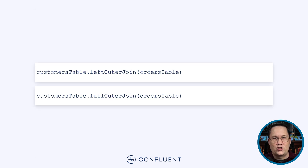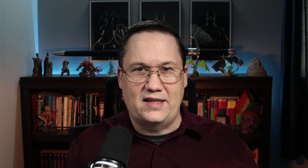In addition to inner joins, Flink supports left outer join and full outer join — check out the documentation for details on how these work. At the beginning of the video, I mentioned that performing joins came with complexities. Let's go back to our original tables to understand this better.